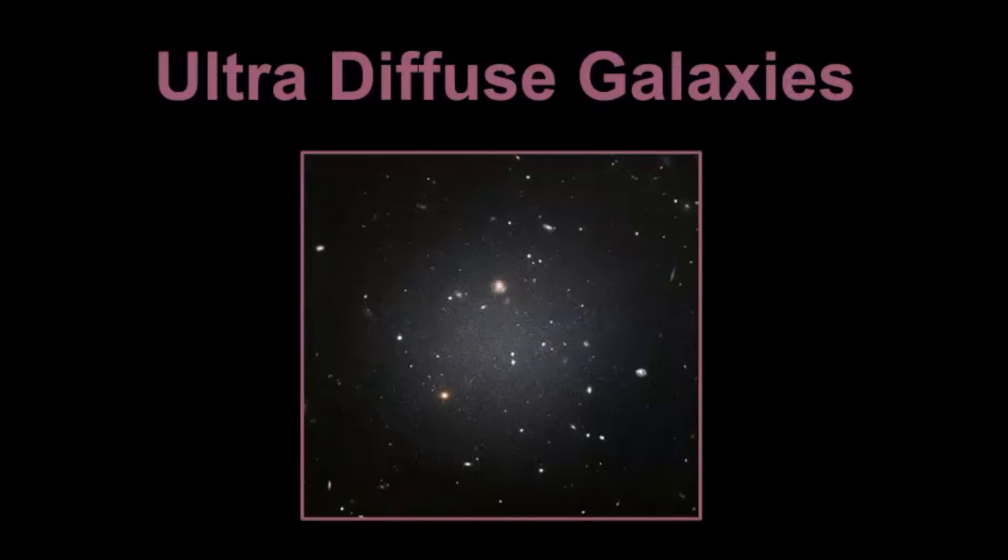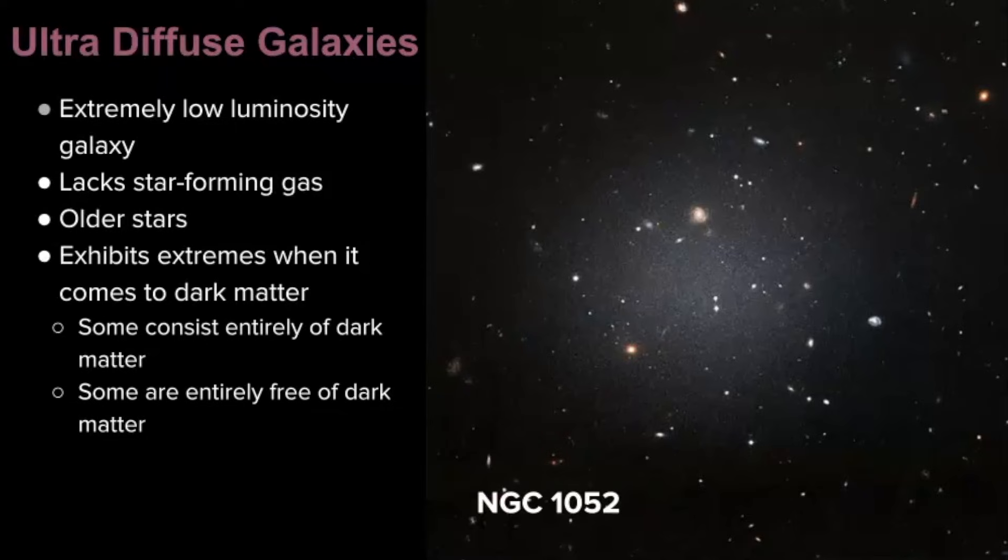Our next type is ultra diffuse galaxies. These are peculiar because they are extremely low luminosity galaxies. They vary so much. Some lack star forming gas and typically have older stars. But then it can also be extreme when it comes to dark matter. Some consist entirely of dark matter, where some are entirely free of dark matter. So they're very unique and peculiar.